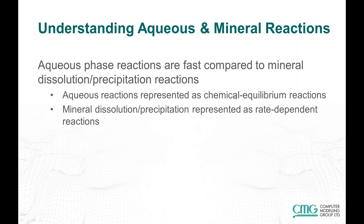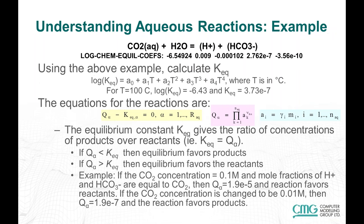The next three slides are designed to help understand the aqueous and mineral reactions in GEM. Aqueous reactions are fast compared to mineral reactions; for that reason, the aqueous reactions are represented as chemical equilibrium reactions that occur instantaneously, whereas mineral reactions are represented as rate-dependent reactions. An example of an aqueous reaction is the CO2 plus water reaction giving H+ plus HCO3−. In GEM, the keyword for defining the equilibrium constant is the log_chem_quill coefficients — you input five coefficients and calculate the equilibrium constant.